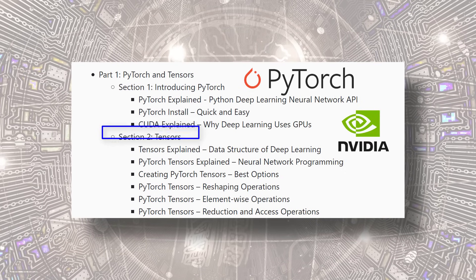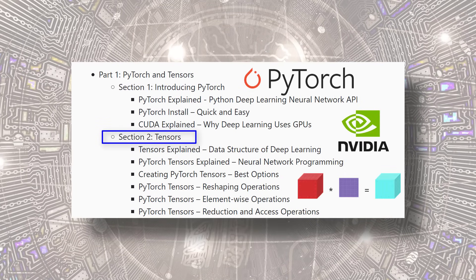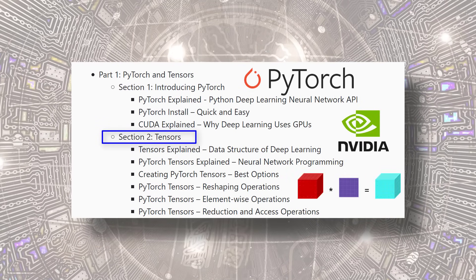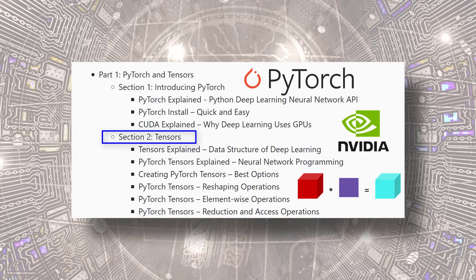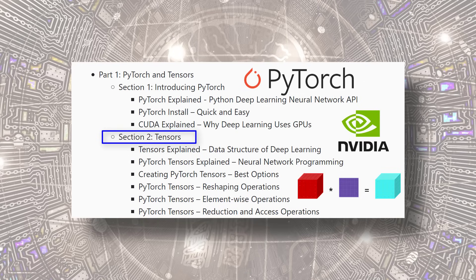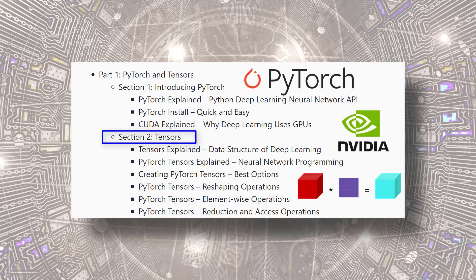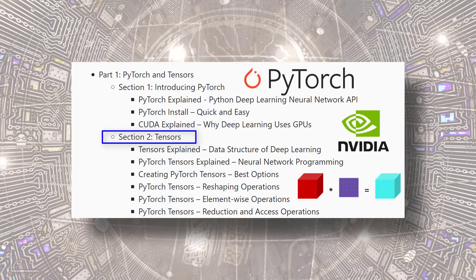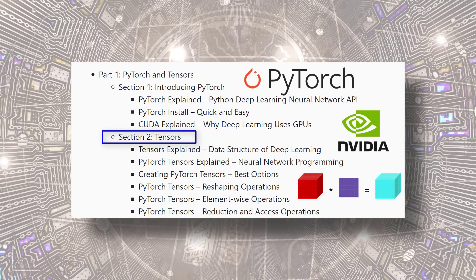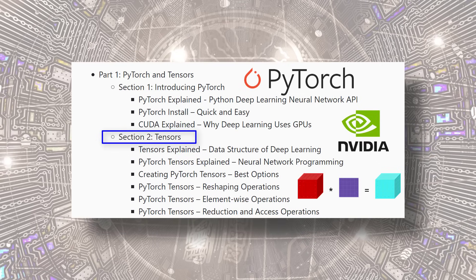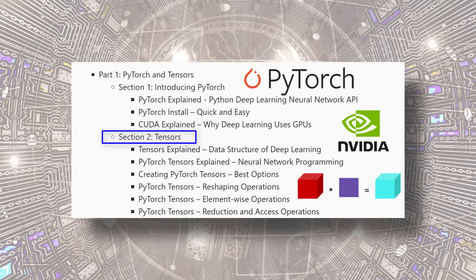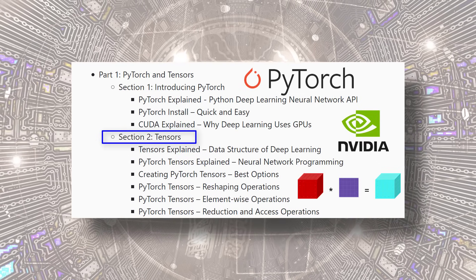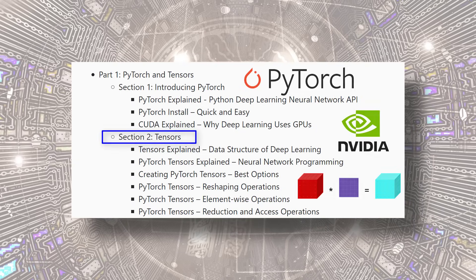Section two will be all about tensors — the data structures of deep learning. Having a strong understanding of tensors is essential for becoming a deep learning programming pro, so we'll be covering tensors in great detail. We'll be using PyTorch for this, but the concepts and operations we'll learn about tensors in this section are necessary for understanding neural networks in general and will apply for any deep learning framework.